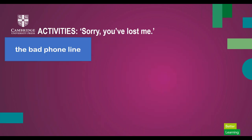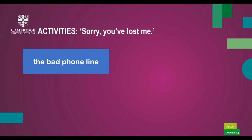The bad phone line: students work in pairs and pretend to have conversations on the phone with their partner. Each student receives a role card with instructions to invite their partner to a particular event and give them directions on how to get there. While students are talking, add some background noise — for example, a thunderstorm — and turn it up every so often to increase the difficulty.